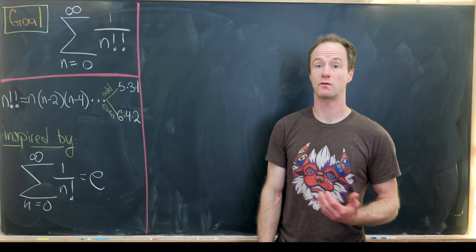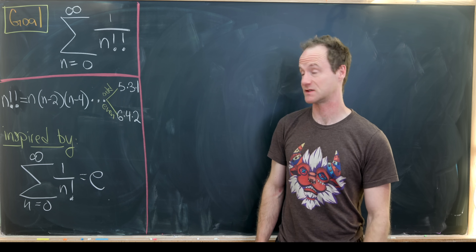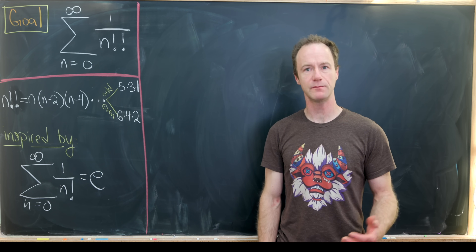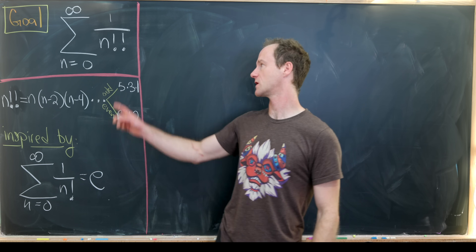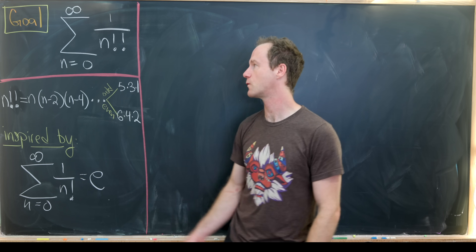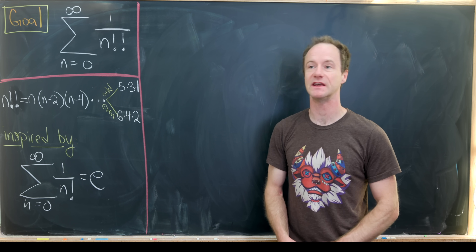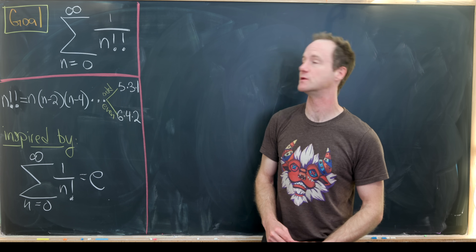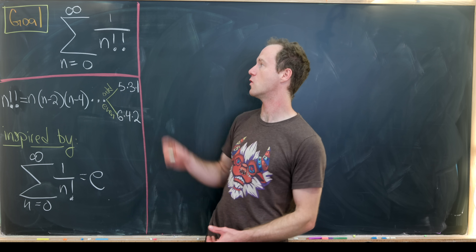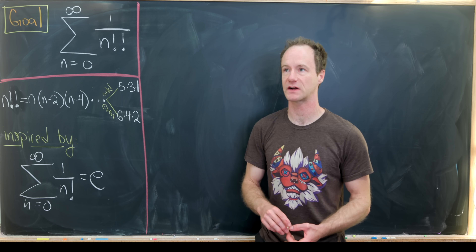Today I've got a variation on a really famous sum. In particular, we're going to find the closed form for the sum as n goes from 0 to infinity of 1 over n double factorial.